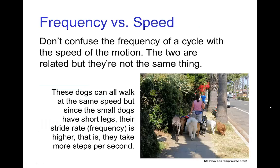You should not confuse the frequency of a cycle with the speed of the motion — the two are related but not the same thing. Consider this example: these dogs, as they're walking along, if they walk together, they're all going at the same speed. But the small dogs have short legs, so they take short steps or a short stride.